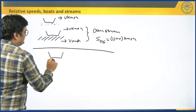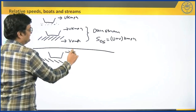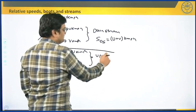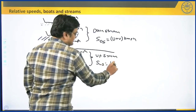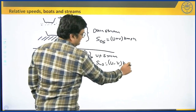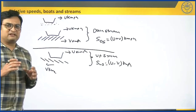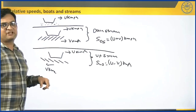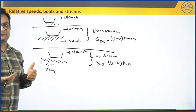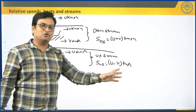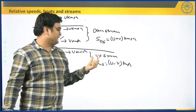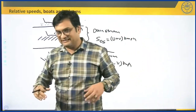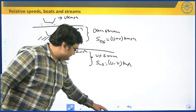The third case is when the boat is moving against the stream — boat going right, stream going left. We call this upstream movement, and the speed upstream is u minus v kmph. So we have three cases in boats and streams: boat in still water (speed = u), boat moving downstream (speed = u + v), and boat moving upstream (speed = u − v). That is the theory needed for this video.